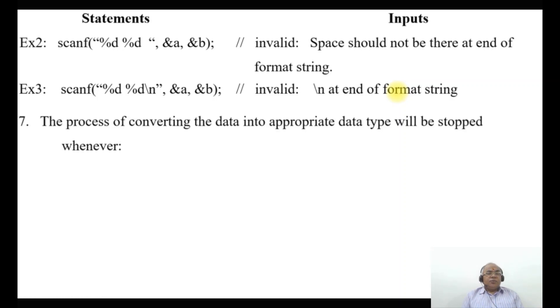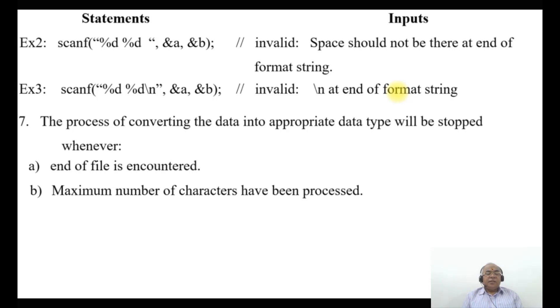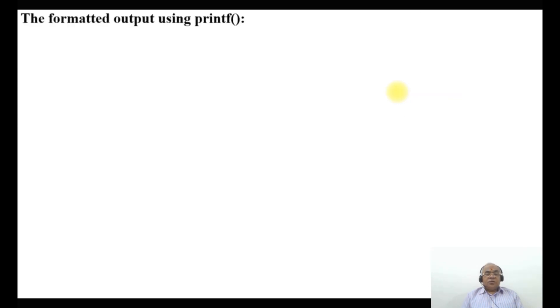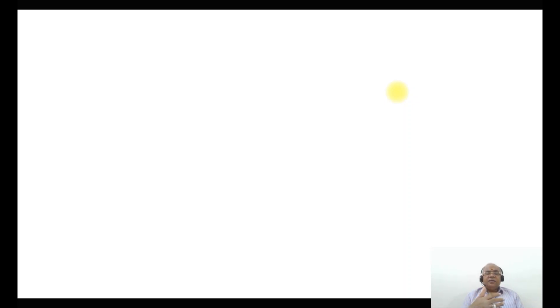Rule 7: the process of converting data into the appropriate data type will stop whenever: a) end of file is encountered, b) the maximum number of characters have been processed, or c) an error is detected in the input. This concludes the explanation of the scanf statement and the rules followed when declaring it.